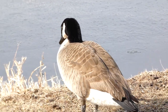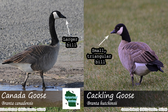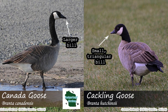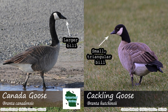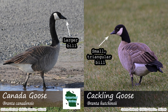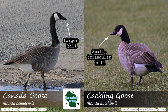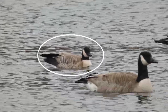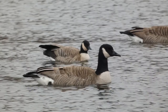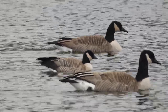The next distinguishing feature to note is the bill. The Canada Goose's bill is long and gently sloping, giving it a more pointed appearance. The Cackling Goose's bill is stubbier and slopes down more rapidly, giving it a more triangular appearance. The Cackling Goose's shorter bill is one of the key features that can be diagnostic in the field, even when there are no Canada Geese nearby to compare with.